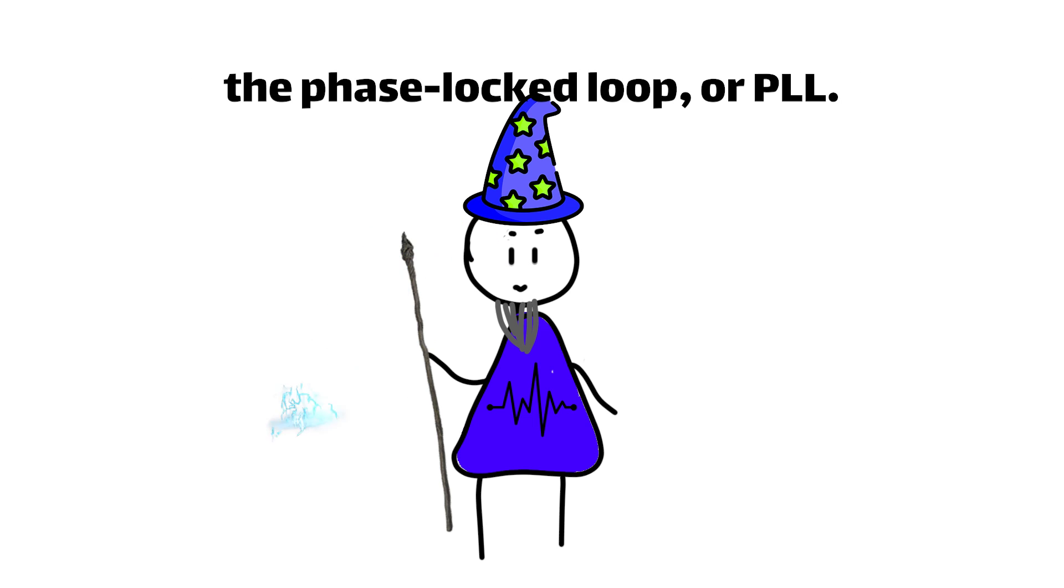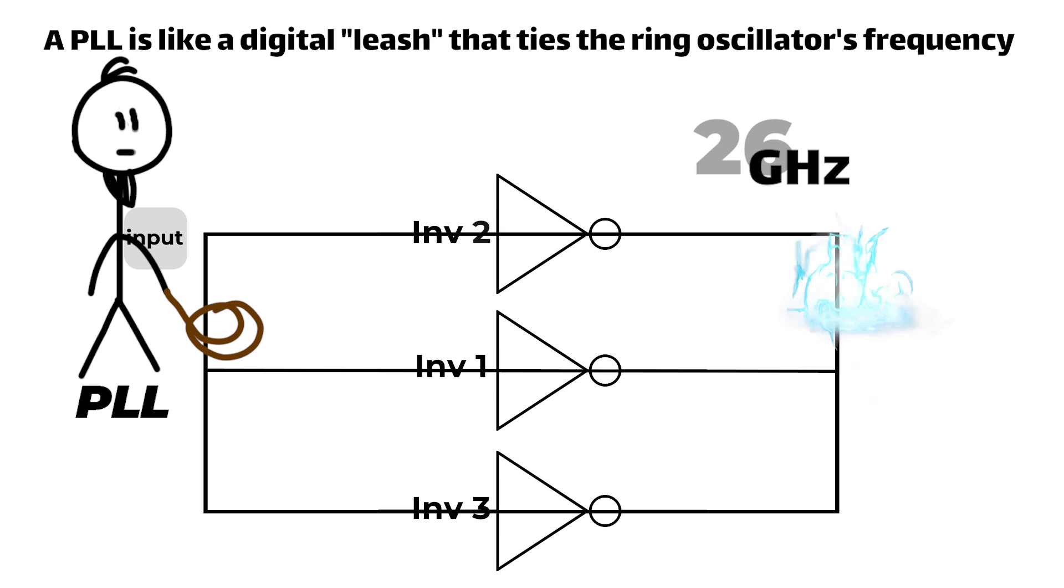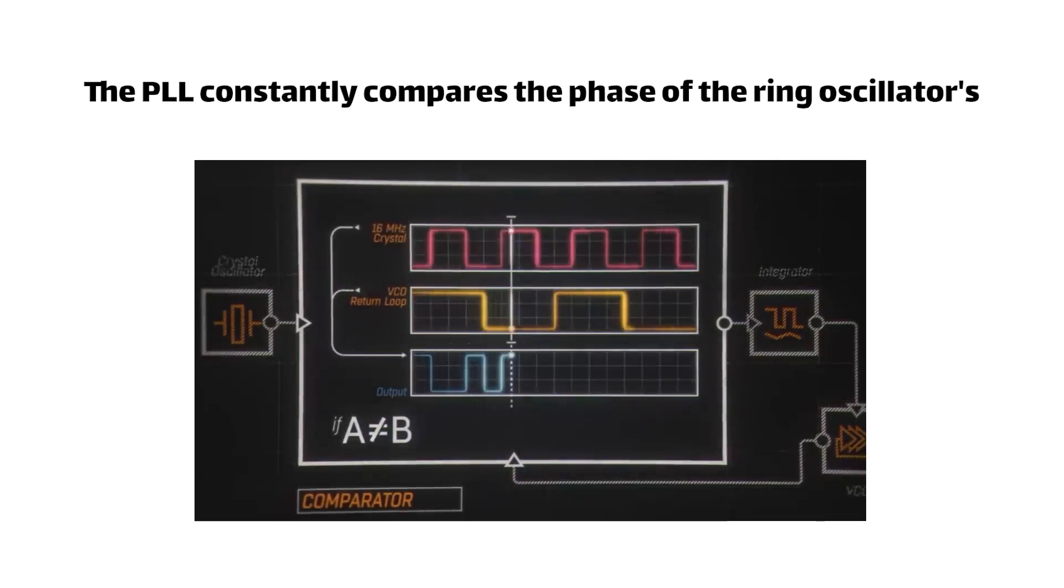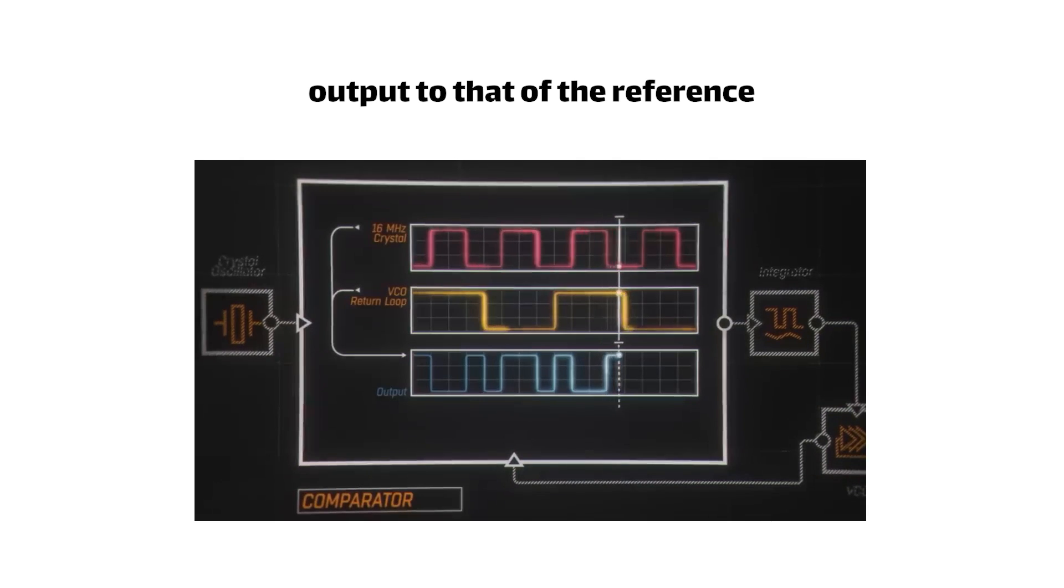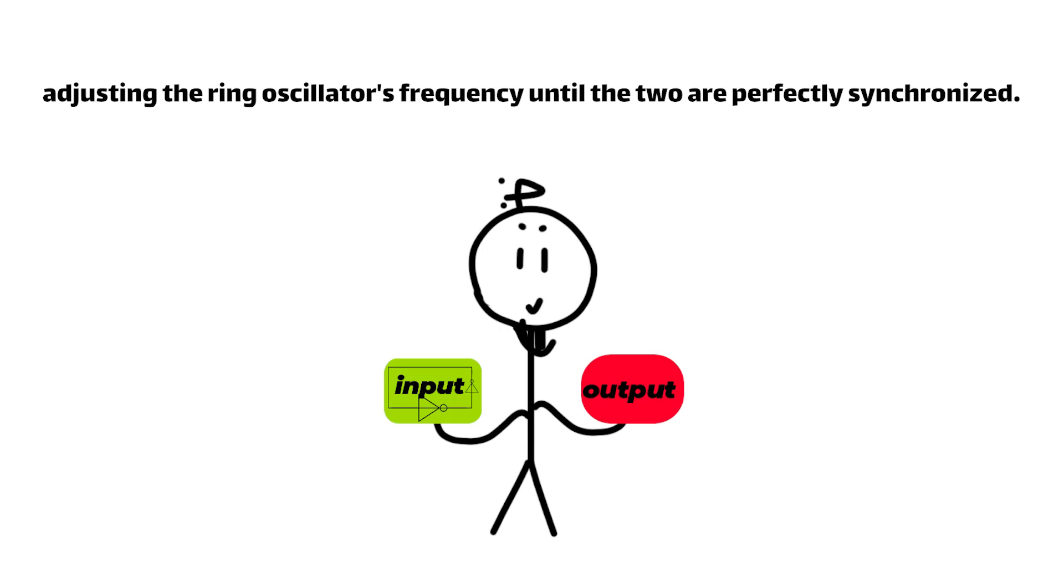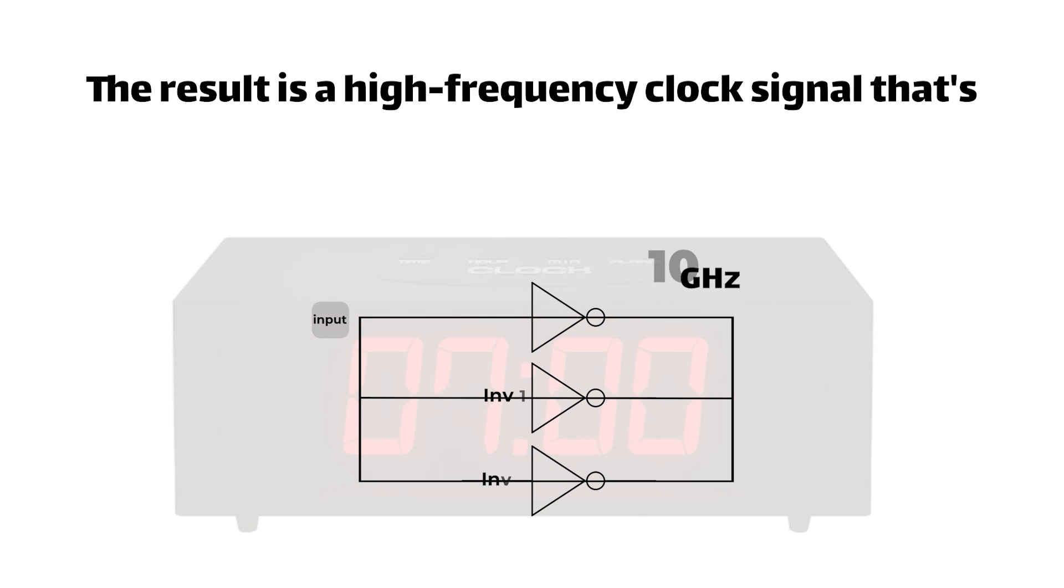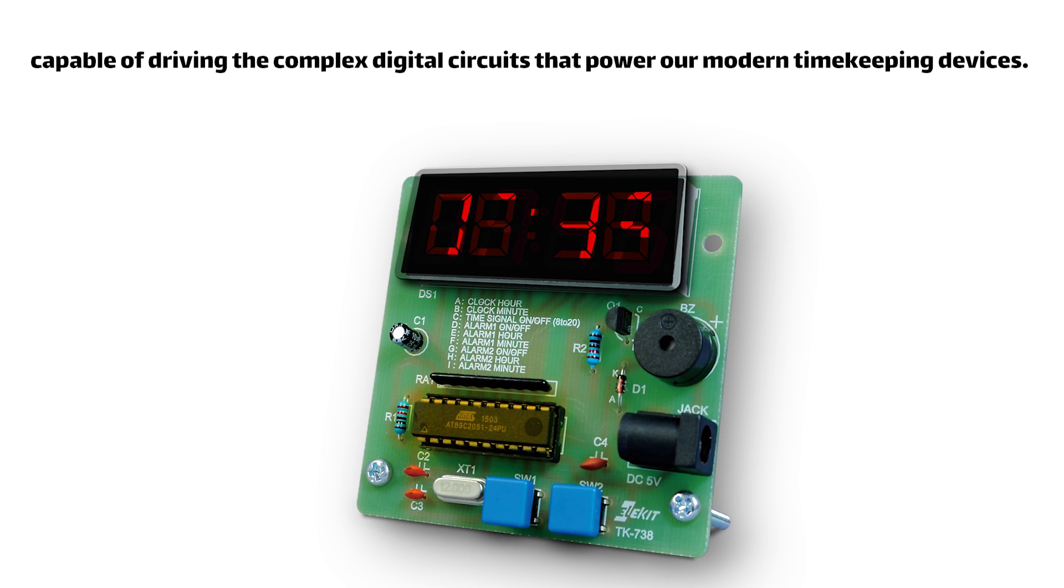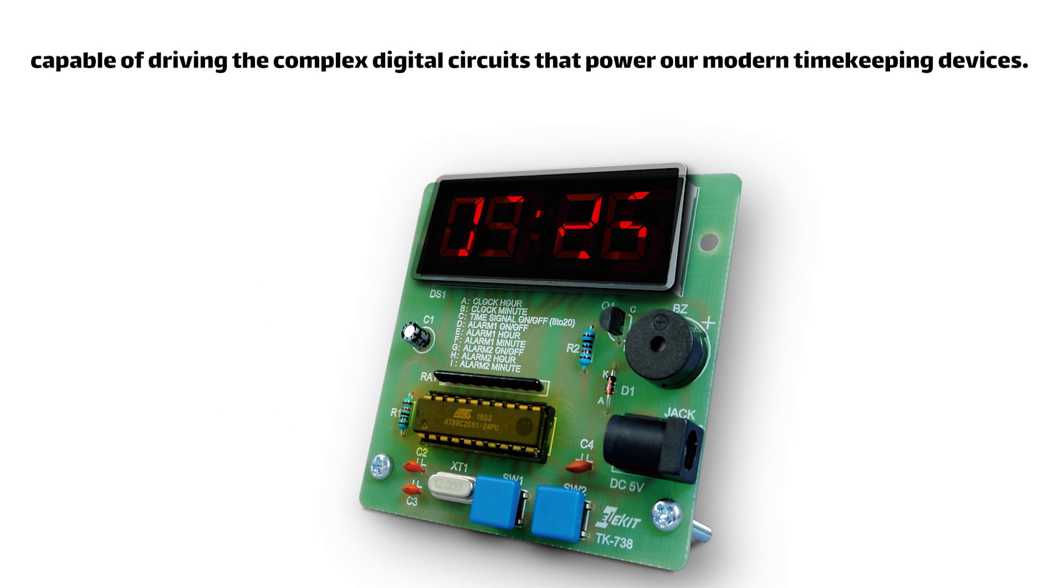The PLL is like a digital leash that ties the oscillator's frequency to a more stable reference, such as a quartz crystal oscillator. The PLL constantly compares the phase of the ring oscillator's output to that of the reference, adjusting the ring oscillator's frequency until the two are perfectly synchronized. The result is a high-frequency clock signal that is both stable and precise, capable of driving the complex digital circuits that power our modern timekeeping devices.